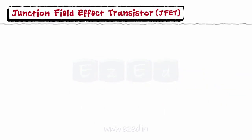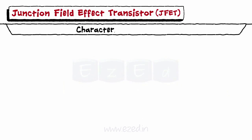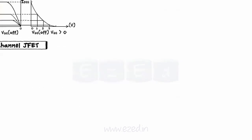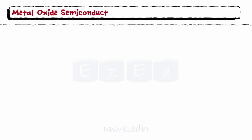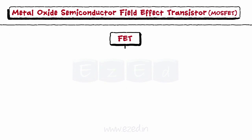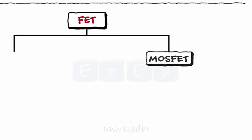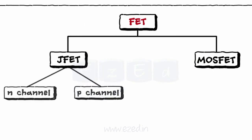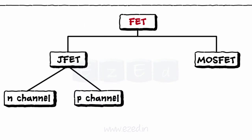The characteristics of JFET are as shown in the figure. The Metal Oxide Semiconductor Field Effect Transistor, or simply MOSFET, is the cousin of JFET as they both exhibit the same nature of FETs.